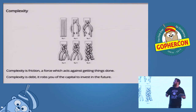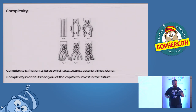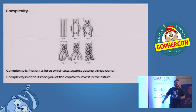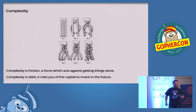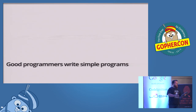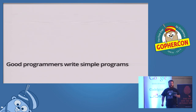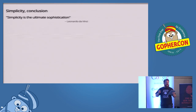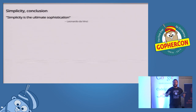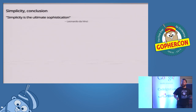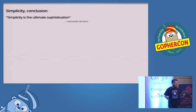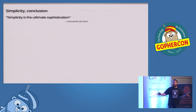A lack of simplicity is obviously complexity. And complexity is a friction — a force acting against getting things done. Complexity is a debt; it robs you of the capital to invest in your future. Good programmers write simple programs. They bring their experience, their knowledge, and their failures to new designs, and learn from them to avoid those mistakes. To steal a quote, simplicity is the ultimate sophistication. Go is a language that is designed to be simple. It's a feature — not a byproduct, not an accident. This was a message that spoke to me when I first learned about Go back in 2009, and it has stayed with me for my entire involvement in the language.